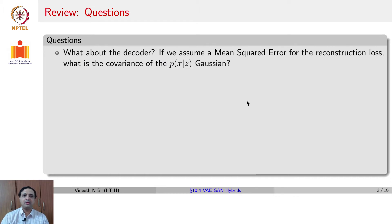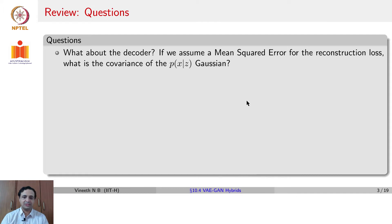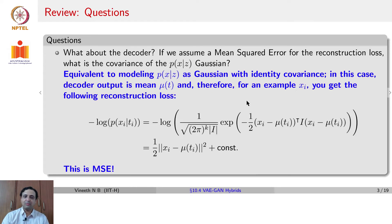What about the decoder? If we assumed mean squared error for the reconstruction loss — recall that the VAE had two terms in its objective function: the reconstruction loss, which is about maximizing the log of a conditional probability, and a KL divergence term — then what would be the covariance of P(X|Z), assuming it is a Gaussian? Using MSE would be equivalent to modeling P(X|Z) as a Gaussian with identity covariance. In which case, you only need to learn the means; the standard deviations are given to be 1.